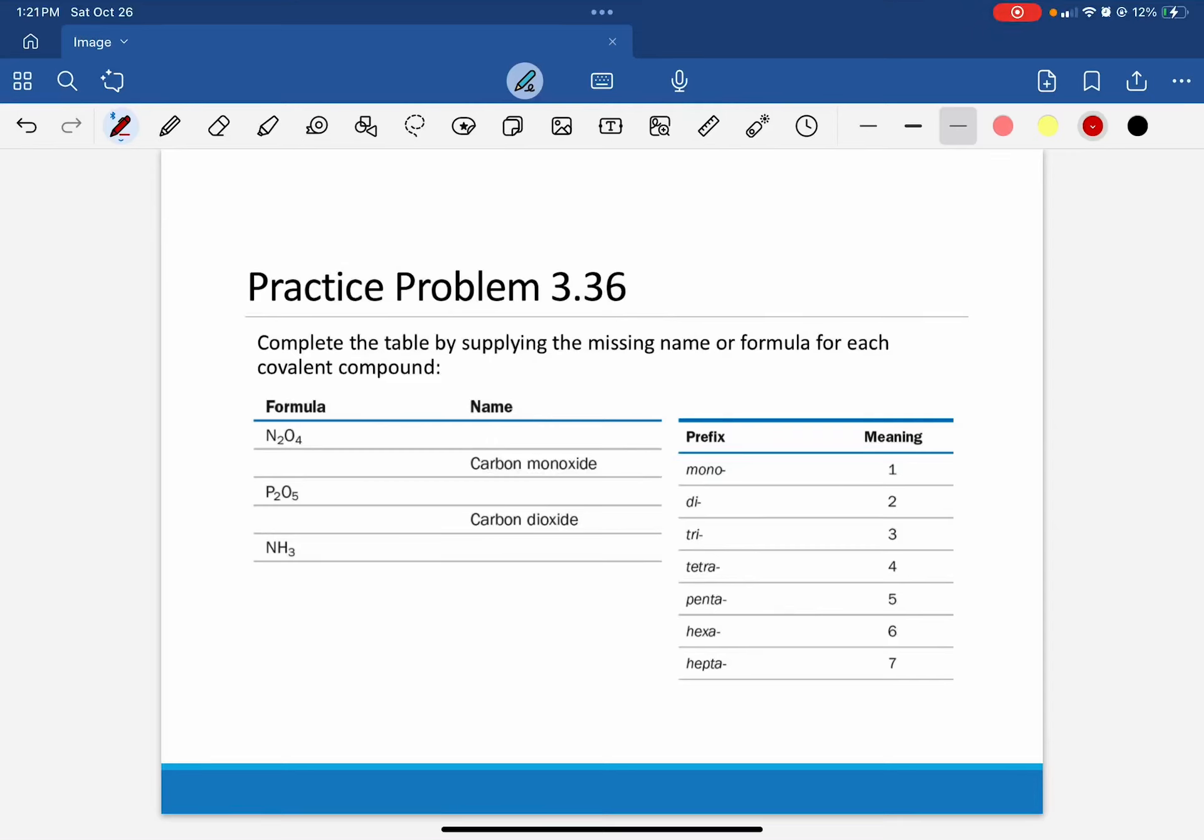Practice Problem 3.36 reads, complete the table by supplying the missing name or formula for each covalent compound.